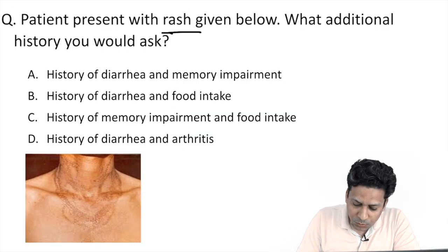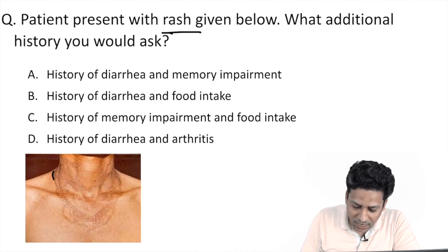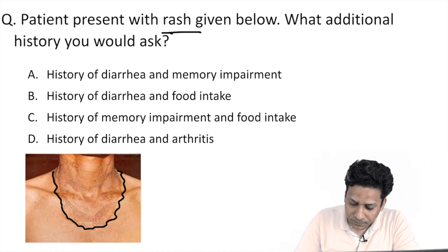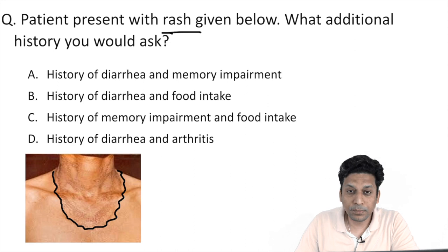The patient presents with a rash as shown in the image below. As you can see, this rash has a well-demarcated area which is present in the neck. What additional history would you ask this patient?